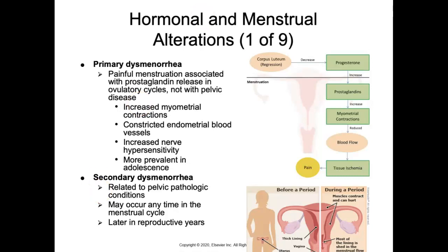We'll begin with dysmenorrhea, divided into primary and secondary. Primary is when we have painful menstruation — not just the usual pain during a period. Approximately 90% of all women experience dysmenorrhea in some form, but this refers to pain painful enough to limit normal activity or cause a woman to seek health care. This is typically associated with prostaglandin release in ovulatory cycles and not with pelvic disease.